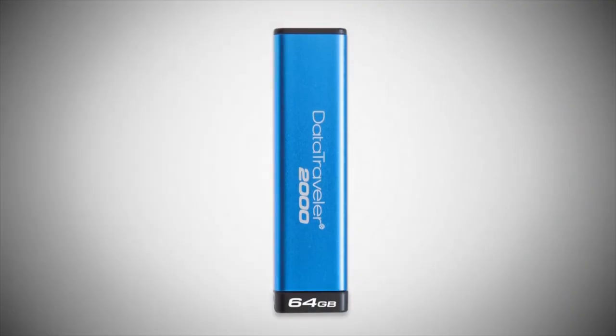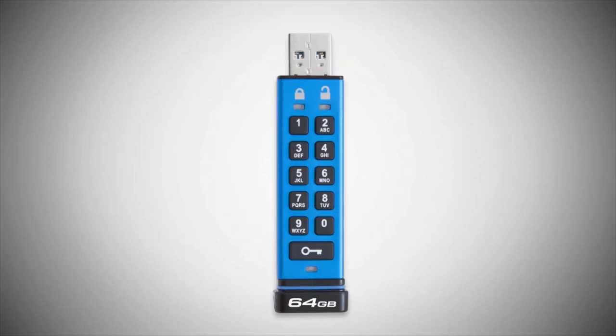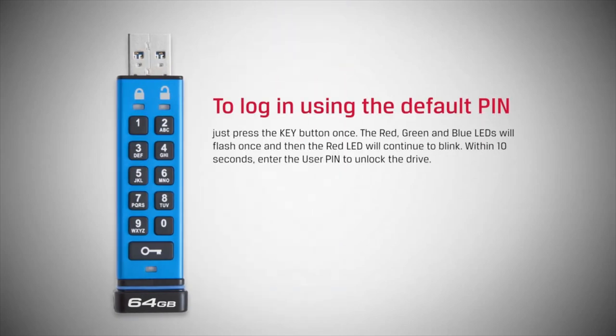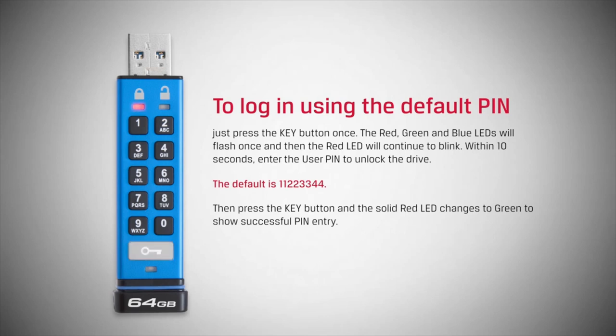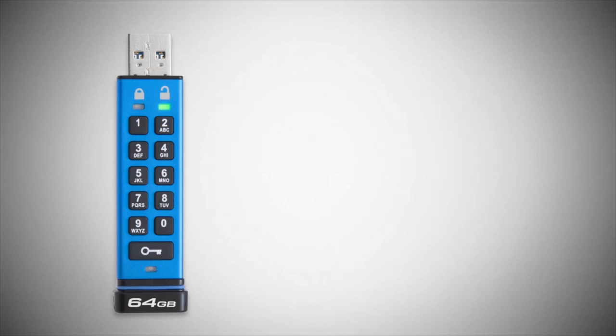Getting started with the DT2000 is easy. To log in using the default pin, just press the key button once. The red, green, and blue LEDs will flash once, and then the red LED will continue to blink. Within 10 seconds, enter the user pin to unlock the drive. The default pin is 1-1, 2-2, 3-3, 4-4. Then press the key button and the solid red LED changes to green to show successful pin entry.